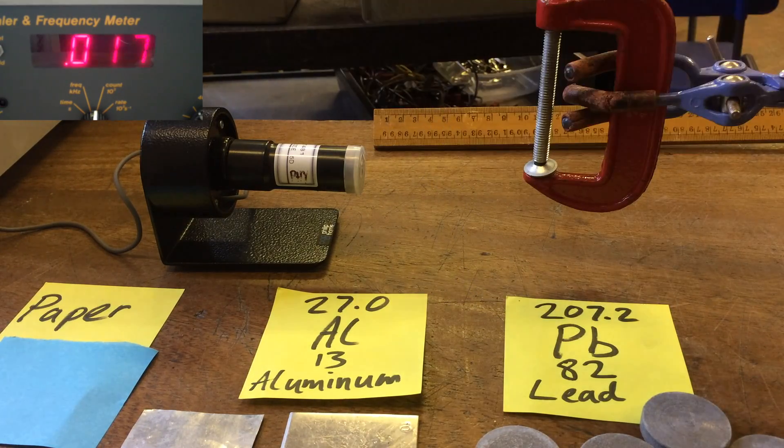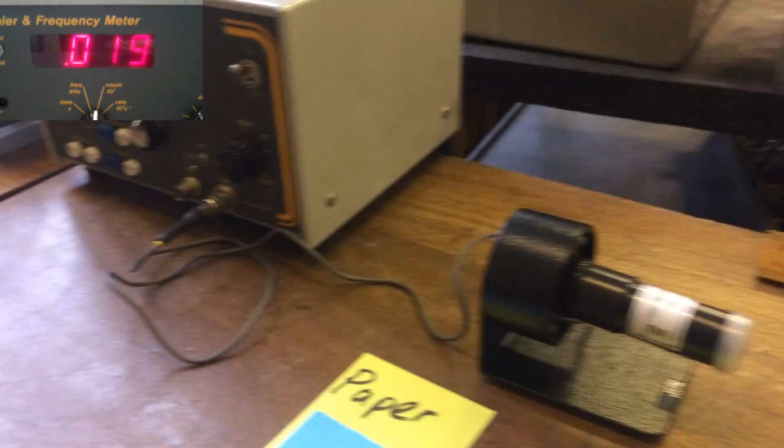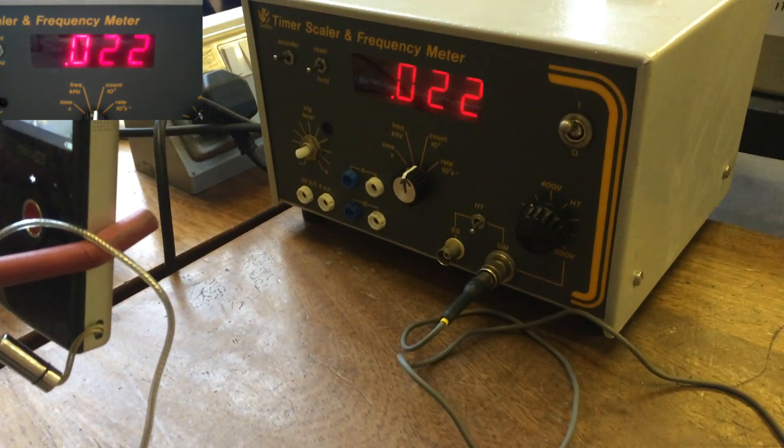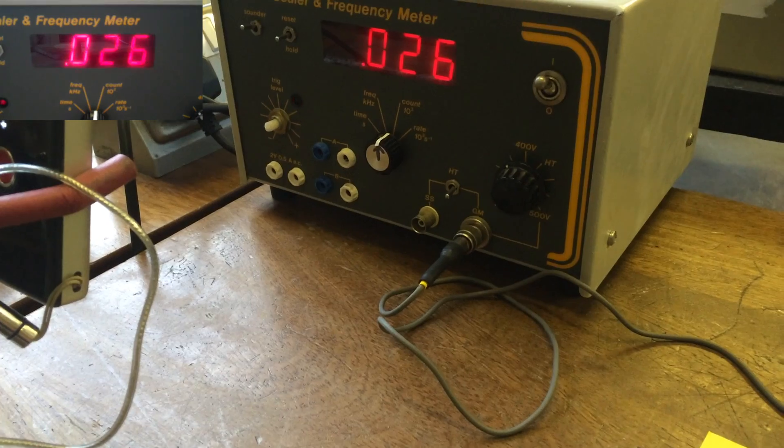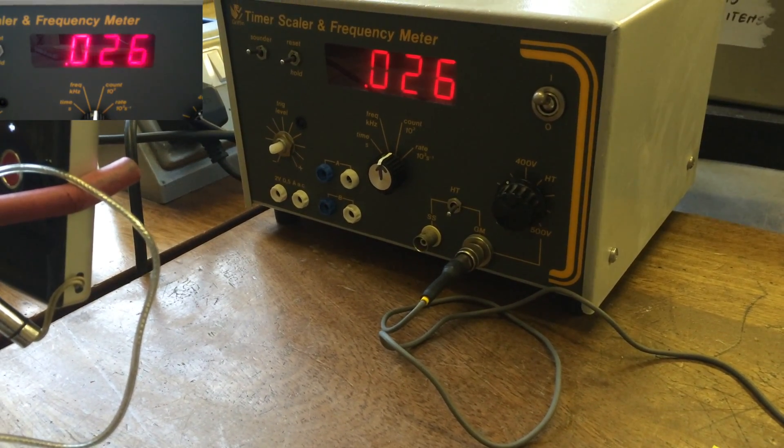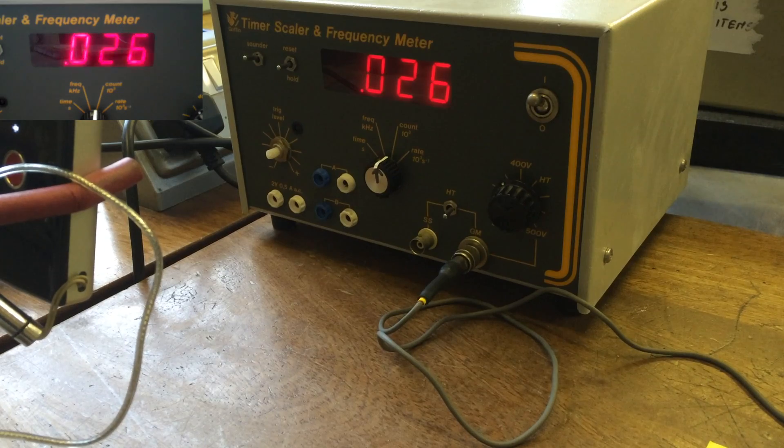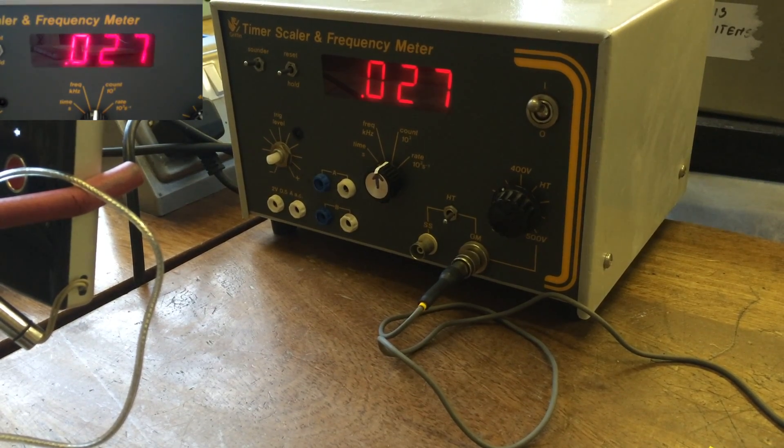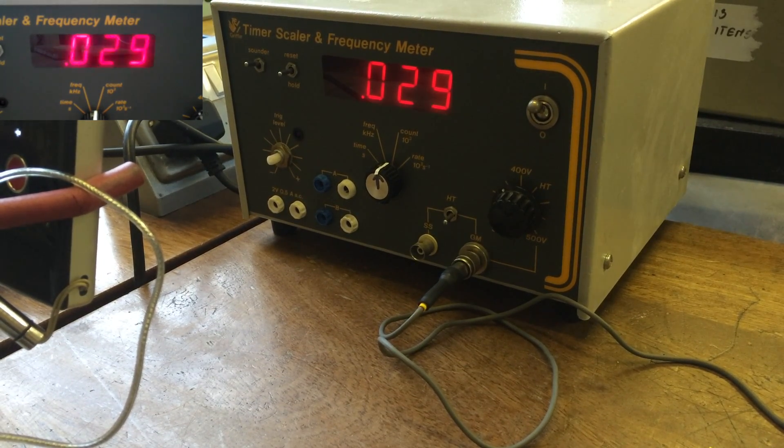This is our ionizing radiation detector. It's connected to the Geiger counter, and each time it detects an ionizing radiation particle, the number on the screen goes up.